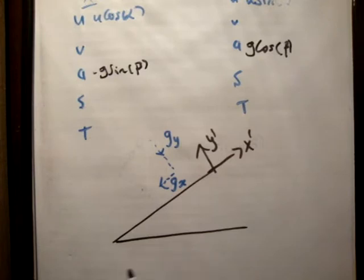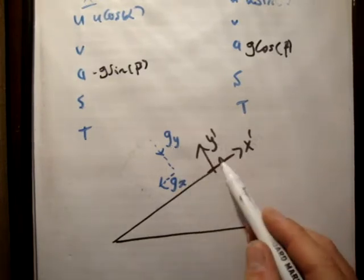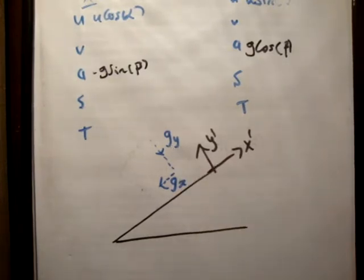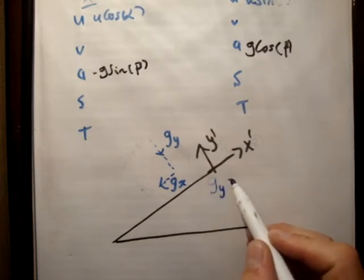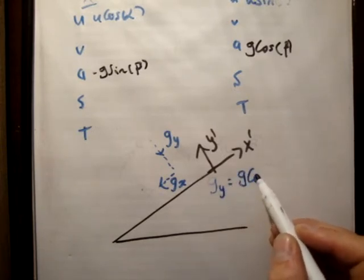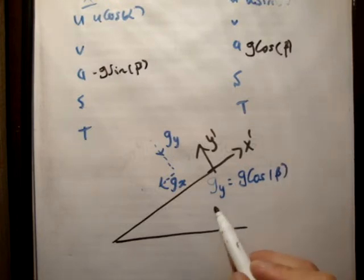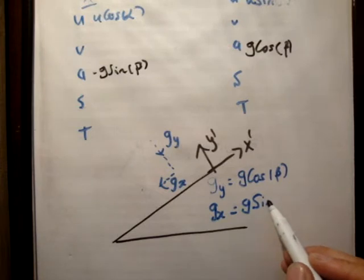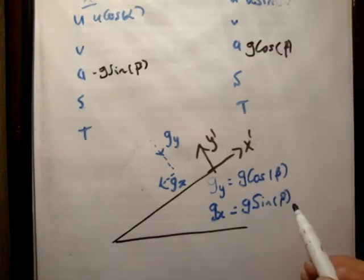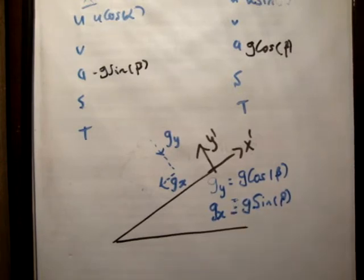Now, look at this. If it's angled this way, g sub y is once again in the negative y prime direction, and g sub x is in the negative x prime direction. So, both of them are decelerating it. So, g sub y would be equal to g times cos beta. And g sub x would be also equal to positive g, but it would be sine of beta. So, if it's inclined in the opposite direction, there will be a negative sign here to account for the fact that gravity is actually accelerating the particle.